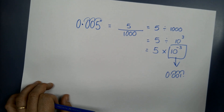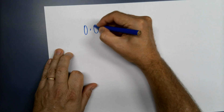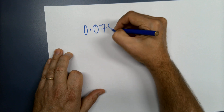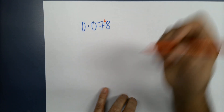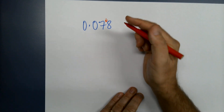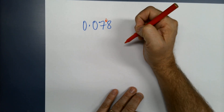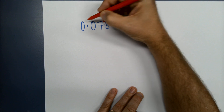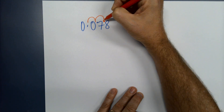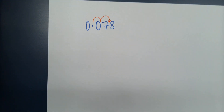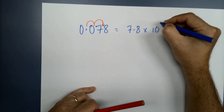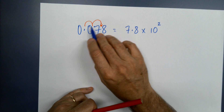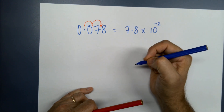Let's have some examples. Take 0.078 — remember the rule, the decimal place has to land after a digit between 1 and 9.9, so I've got to get the decimal place from there to after the 7: one, two. That's 7.8 times ten — but because this was a small number to start with, the power is going to be negative: 7.8 times ten to the negative two.